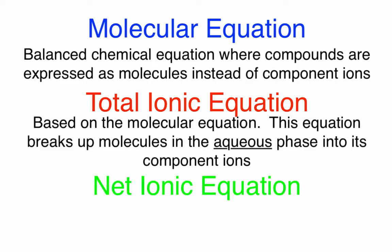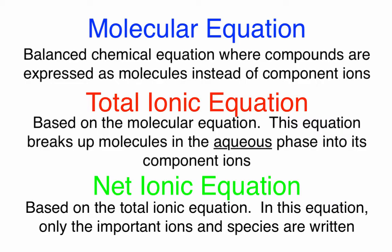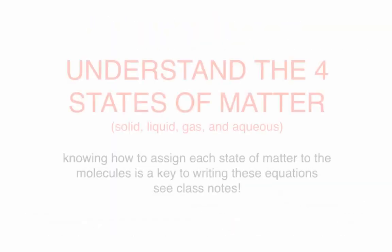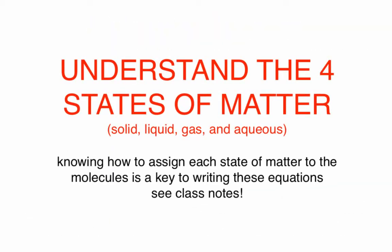The last equation is the net ionic equation. In this equation, only the important ions and species are written down. Understanding the four states of matter — solid, liquid, gas, and aqueous — is very important in writing these equations.